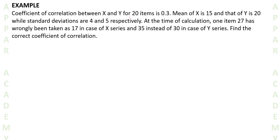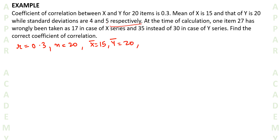The coefficient of correlation between x and y for 20 items is 0.3. So r is equal to 0.3 and n is equal to 20. Mean of x is 15, mean of y is 20. While standard deviations are 4 and 5 respectively — so standard deviation of x is equal to 4, and standard deviation of y is equal to 5.